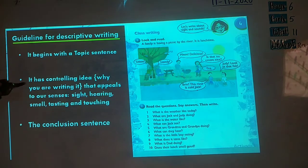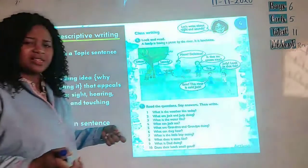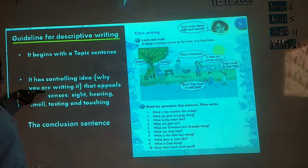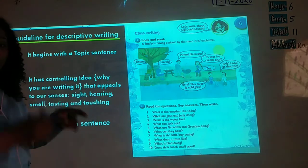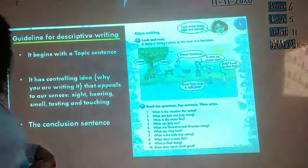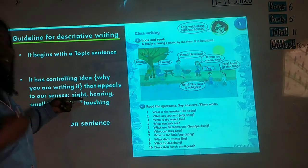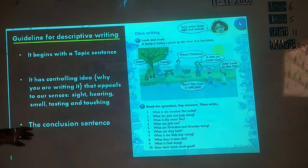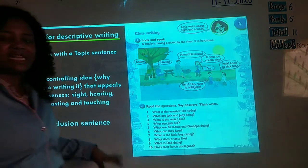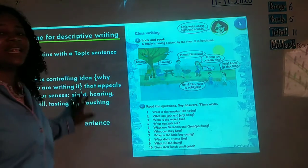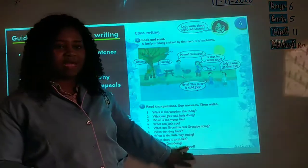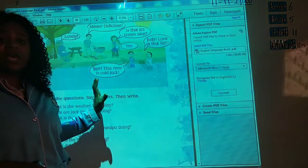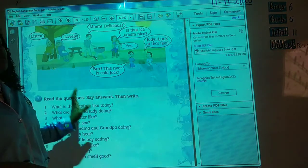Then here, we come to the second one, the second guideline. It has controlling ideas, controlling ideas that want to keep your readers reading more while you are writing. This controlling idea will tell the reader the reason why you are writing. That appeals to our senses: sight, hearing, smell, tasting, and touching. Now, the last one is the conclusion sentence. So all these are the guidelines that will help you build a better descriptive writing.